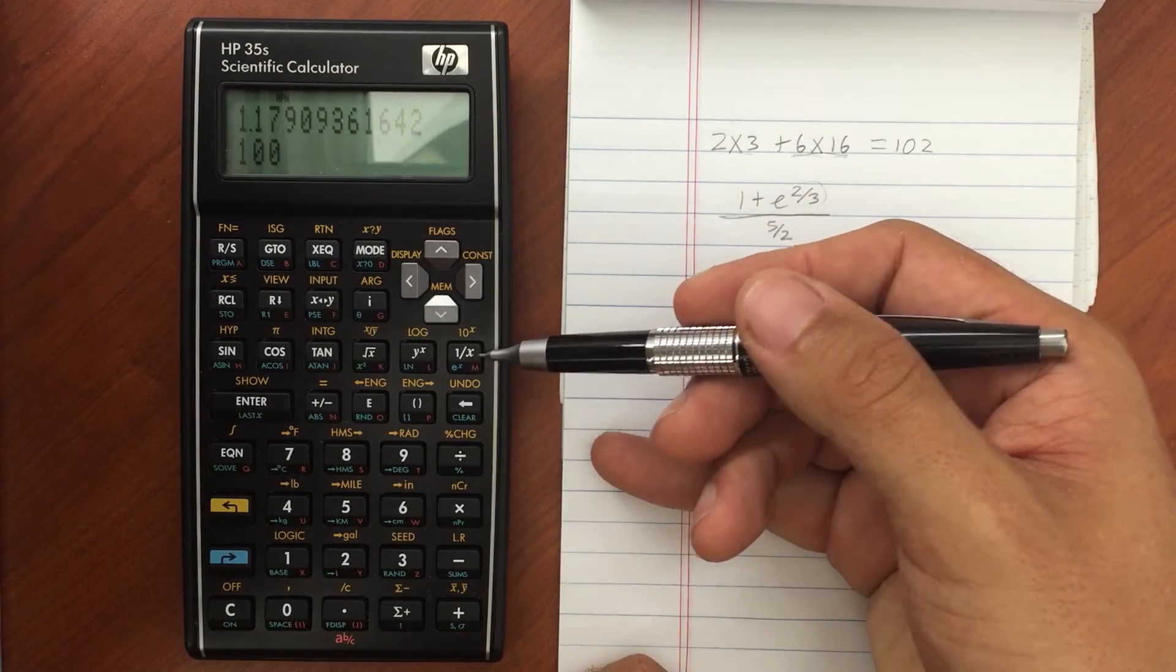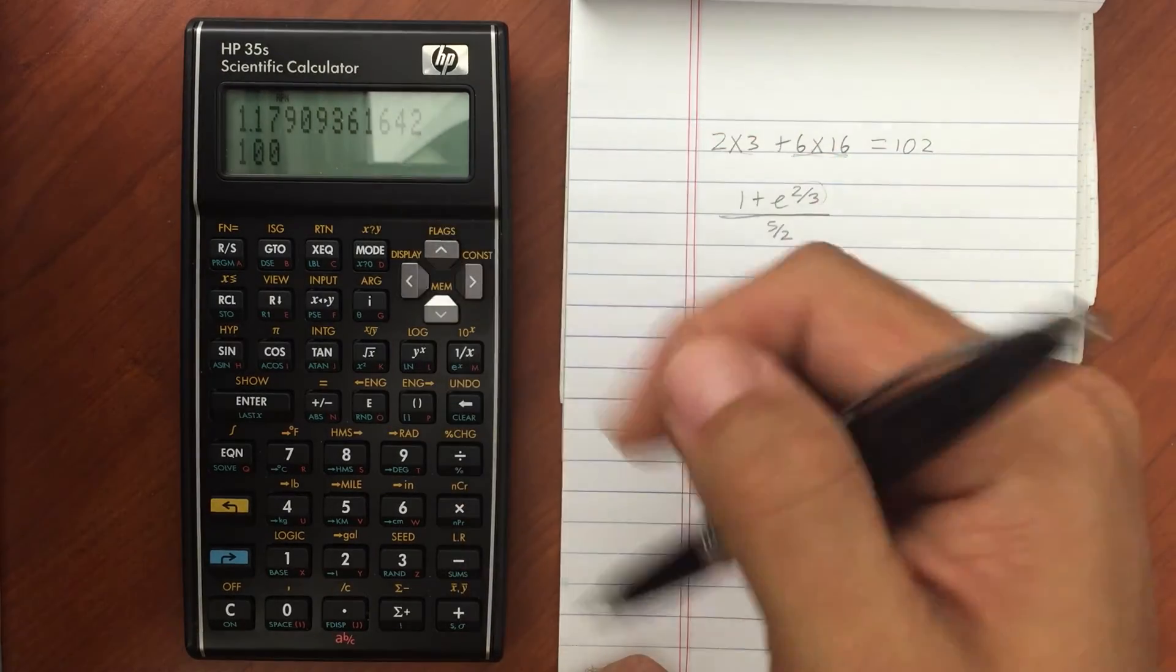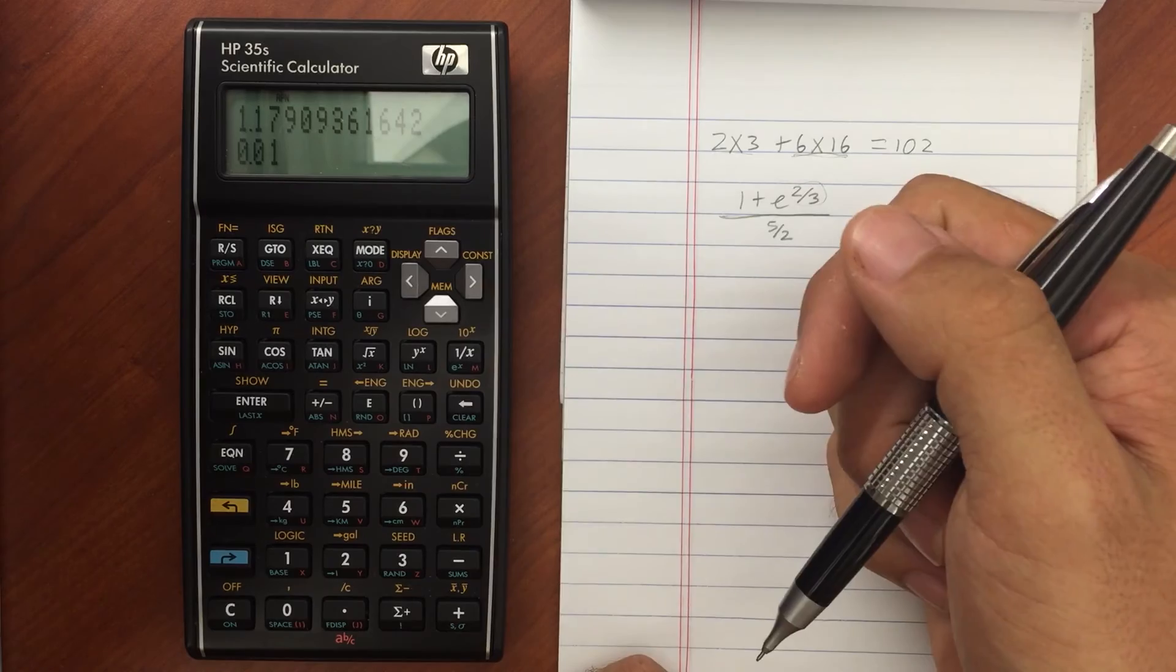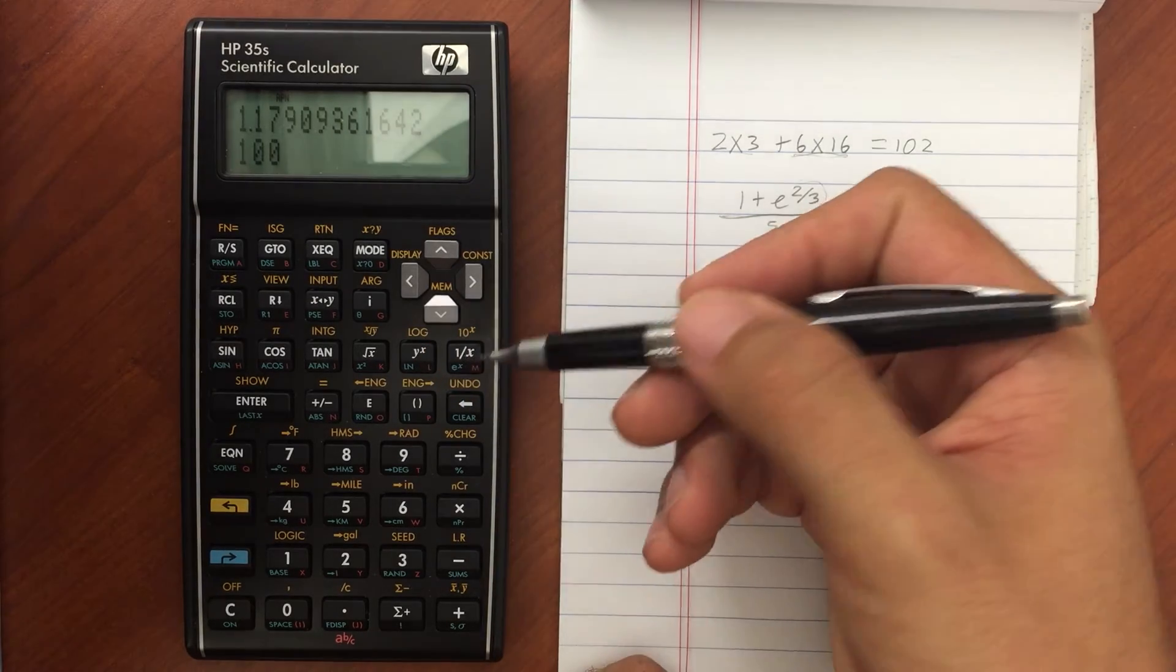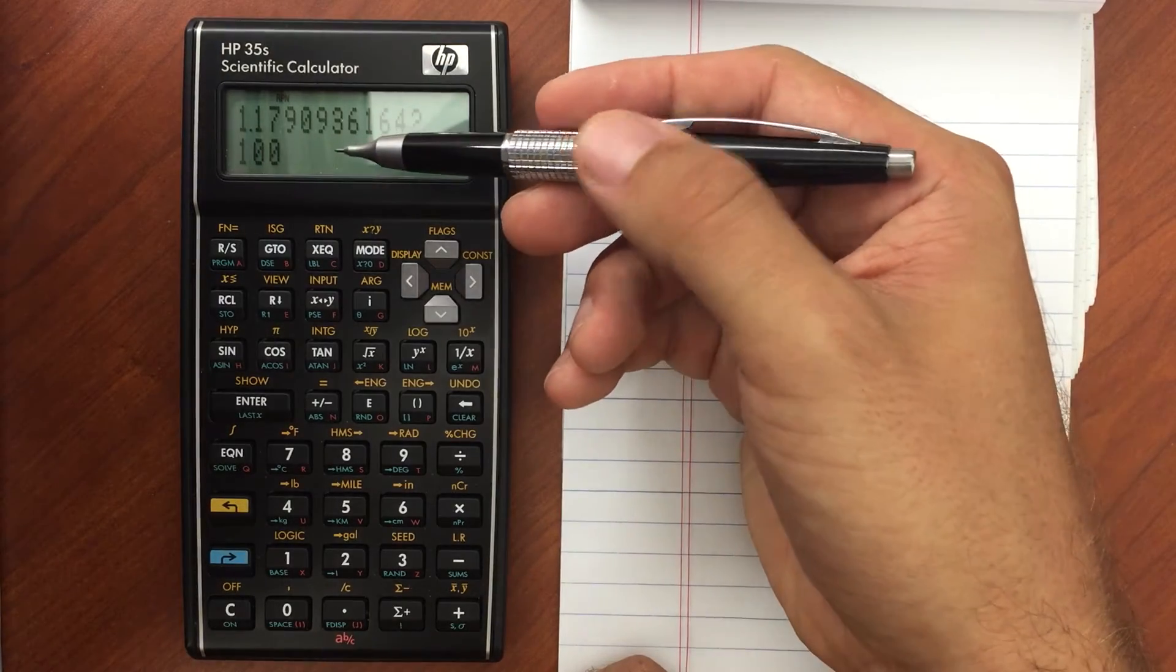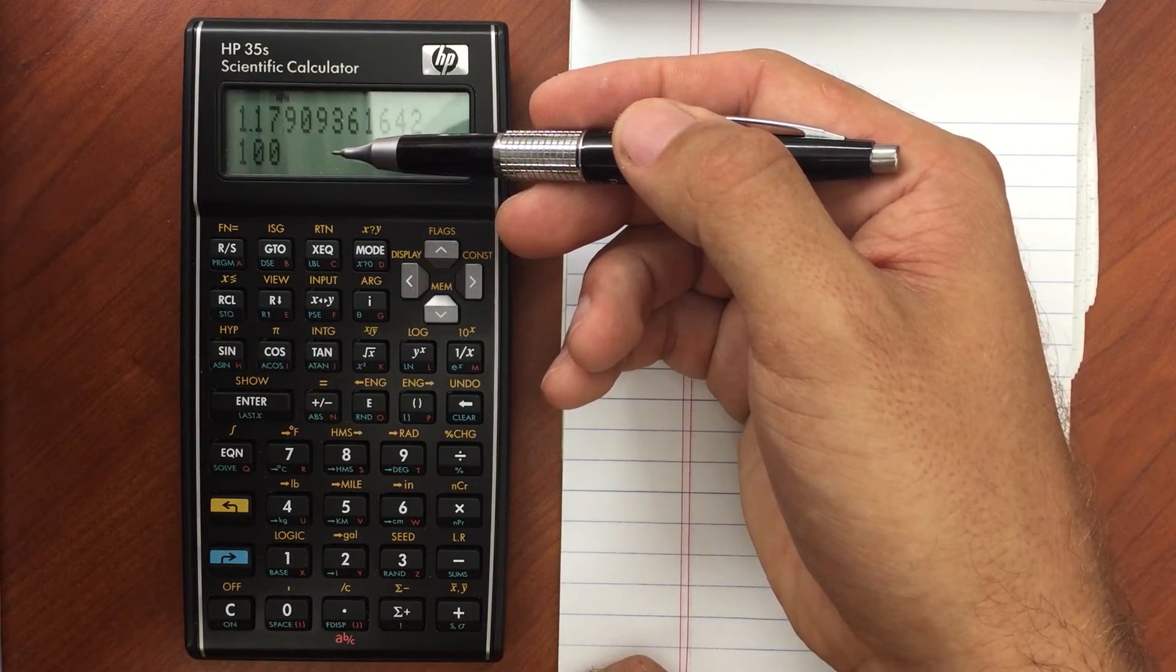If I do 1 over x, that is the reciprocal of what's in the x register. And e to the x is the natural number to the power of what is in the x register.